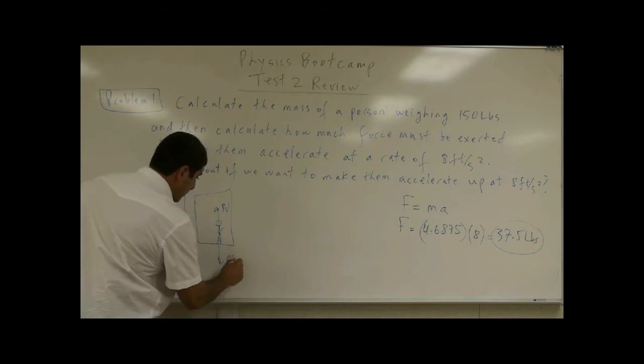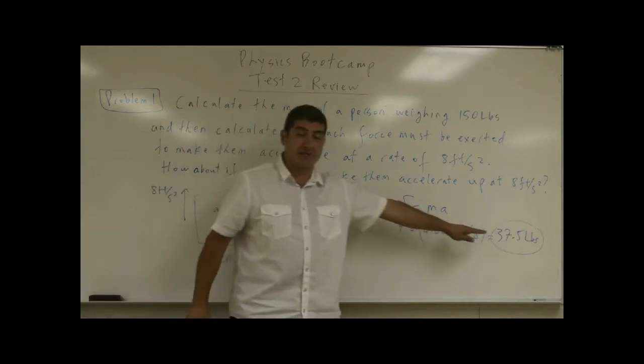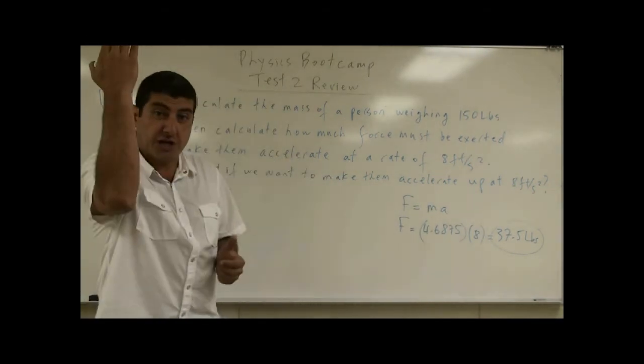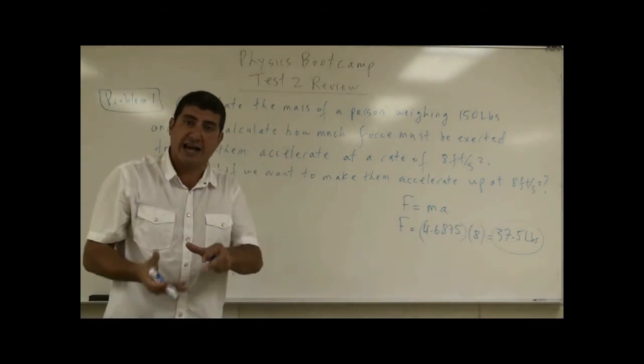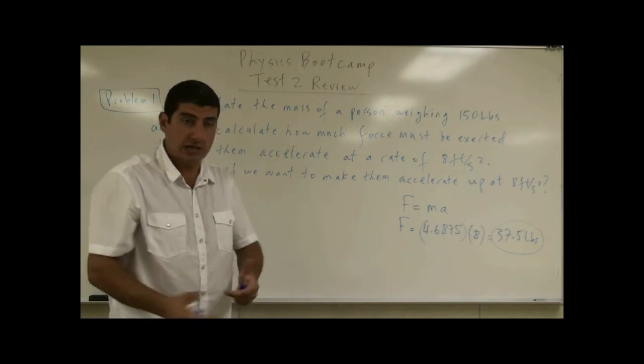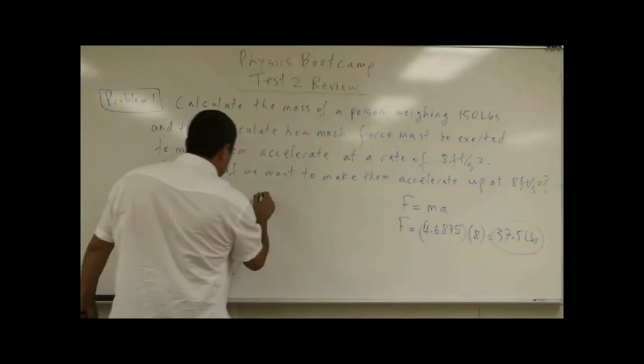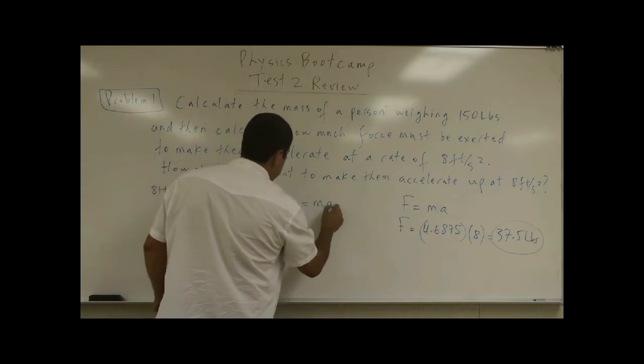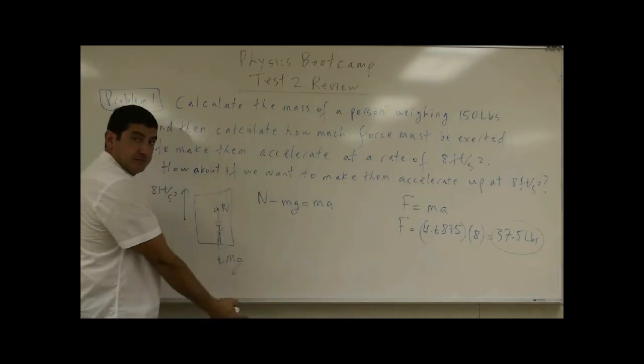And now, the answer is not going to be the same as 37 and a half. Why? Because the elevator or the floor has to push on him greater than his weight. It has to overcome his weight. So we're going to say N minus MG equals MA because his weight is pushing him down.